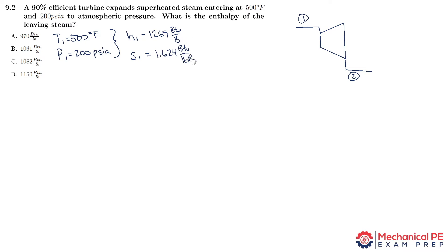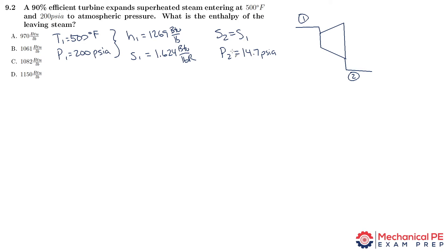Sometimes I write this as pound-Rankine, sometimes pound-Fahrenheit — either way is fine. Now we make the starting assumption that s2 equals s1, the same entropy for the ideal case. But the pressure at state 2 is different: it's atmospheric pressure, 14.7 psia. So we go to the saturated steam table organized by pressure, find the line for 14.7 psi, and look up hf, hfg, sf, and sfg for state 2.